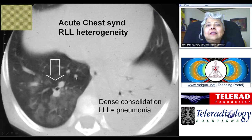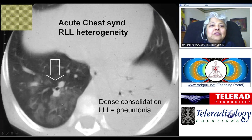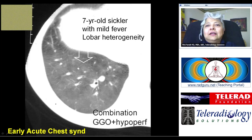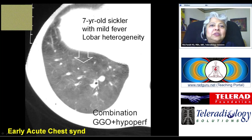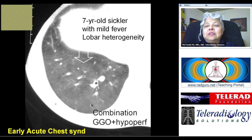This is a child with sickle cell disease and heterogeneous lungs. There is dense consolidation in the left lower lobe and ground glass opacities in the right lower lobe. The microcirculation is attenuated due to sickling of red blood cells — pulmonary edema with decreased vascularity. Another sickle cell patient has lobar heterogeneity with attenuated microcirculation. Normally a one-centimeter polygonal segment should have at least two or three vessels, but here arterioles and venules are missing in that lung segment. This is a combination of ground glass opacities with hypoperfusion.